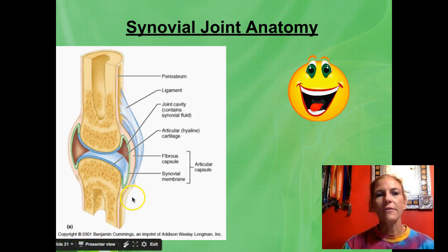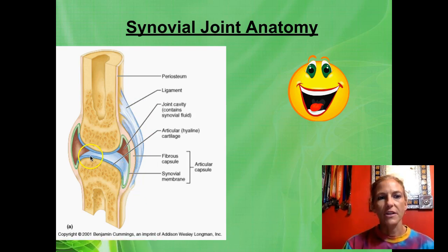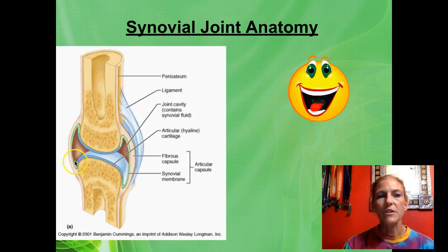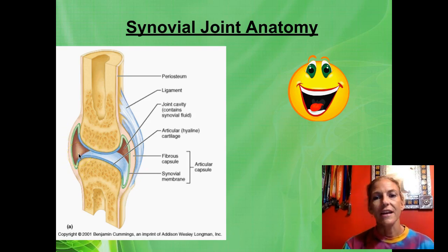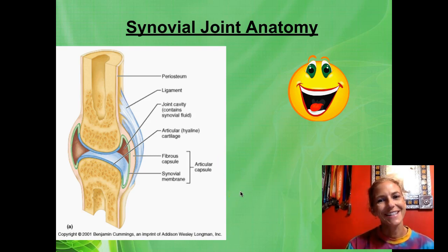So there you have it — the basics of synovial joint anatomy. We talked about ligaments holding bones to bones, tendons holding muscles to bones, articular cartilage, the synovial membrane which produces synovial fluid within the joint cavity. You should now feel better understanding the joints of your appendages.